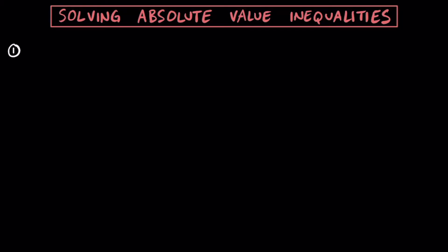For this first example, let's try something like this where we have the absolute value of X is going to be greater than or equal to 6. Remember that we can rewrite our absolute value inequalities as compound inequalities. In one scenario we can say that X is going to be greater than or equal to 6 — just drop the absolute value symbols — and because we have a greater than or equal to symbol, we're going to use the word OR. For a second scenario, X is less than or equal to negative 6. These are our two scenarios, or the compound inequality.